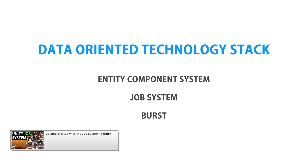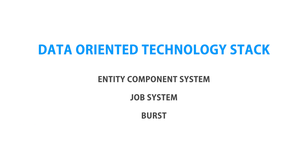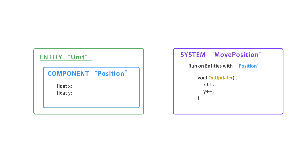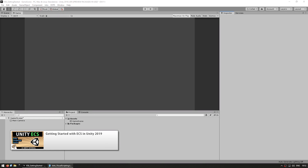ECS stands for the Entity Component System, and this is a data-oriented programming paradigm. You have components which hold data, then you have entities which hold instances of components, and finally you have systems which run logic on entities and components. For a more detailed explanation, check the links in the description. Here, after you see the example, it'll all become easier to understand.